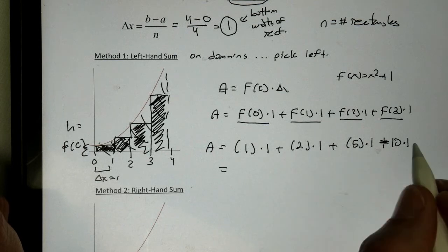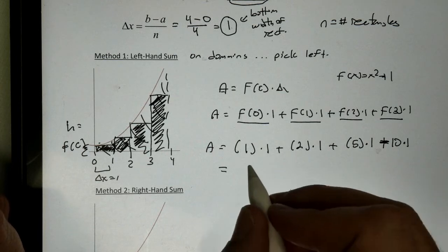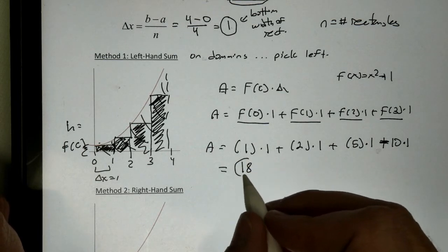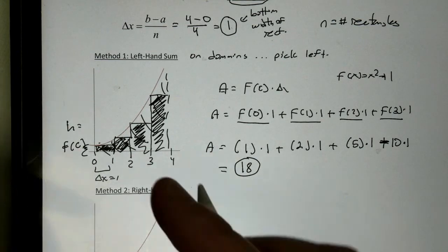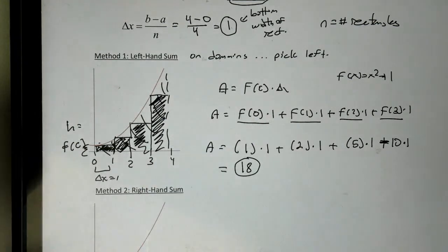And I can add those all up together. 1, 3, 8. 8 plus 10 is 18. And that's about 18 square units. It's not the exact data. Matter of fact, most of you guys can realize this is going to be way underestimated.